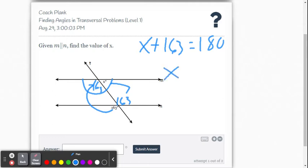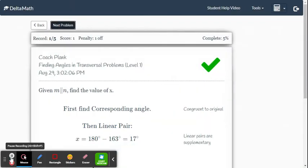So we subtract 163 from both sides. We're going to get X equals 17 degrees. Enter that in. Got it.